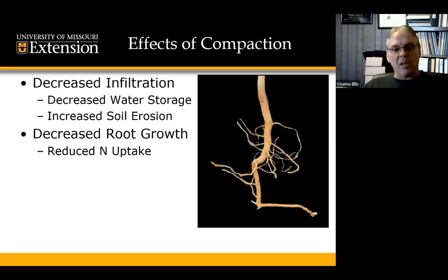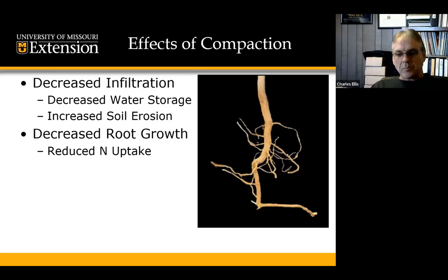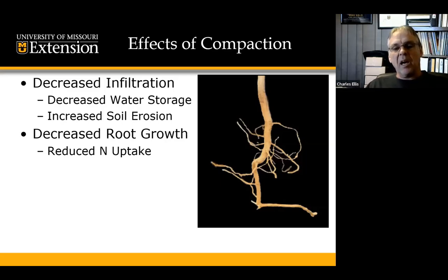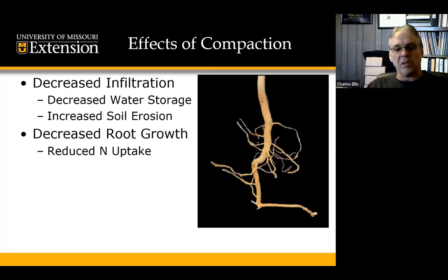Roots and plants can really tell us a lot. When we start getting into a lot of compaction issues, we get diminished root growth. Compaction also leads to decreased infiltration into the soil, so we're not getting as much water into the soil, decreased water storage in the soil profile because we've compacted and limited the pore space we originally had. Less water is entering the soil profile, so we have more surface runoff, which has the potential to increase soil erosion.